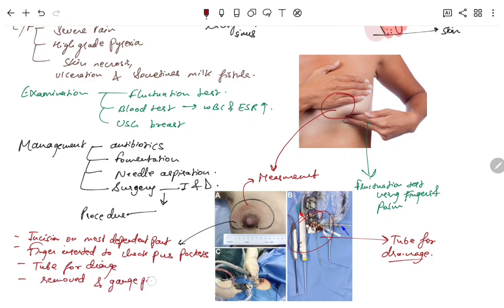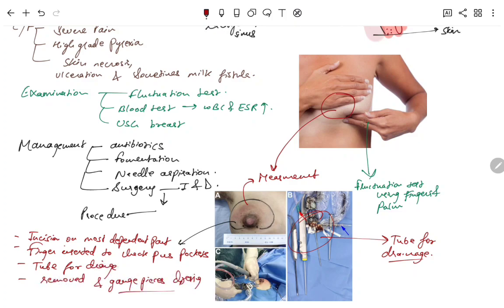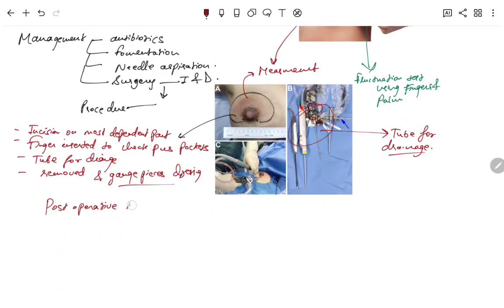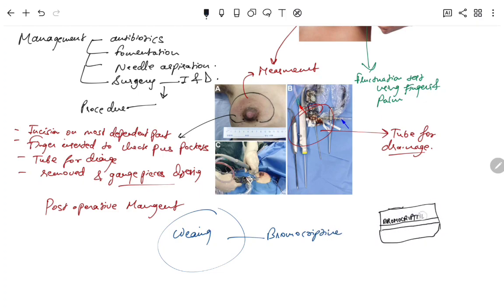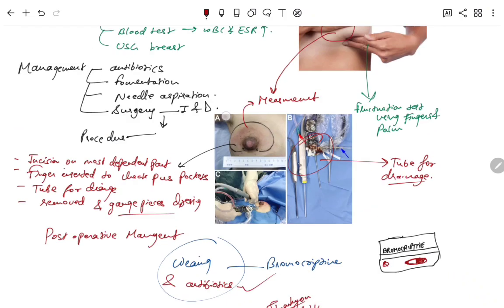And then removal of the tube and gauze pieces and dressing is done. Post-operative management: all the lactating mothers will do weaning, that is stopping the milk formation using bromocryptin medicine. And then another thing is the usage of antibiotics for not getting any more recurrent infections.